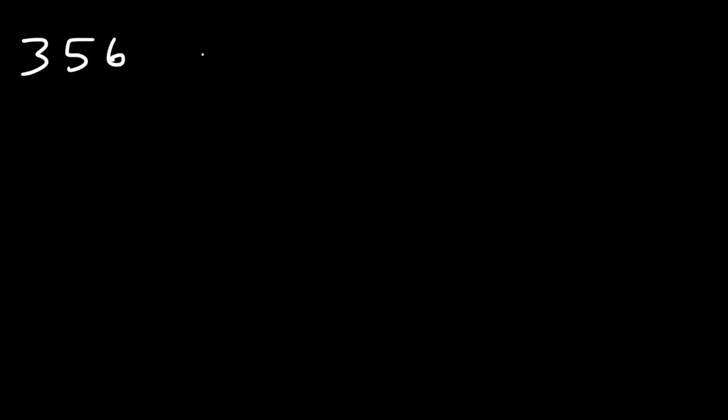In this video we're going to talk about how to convert a decimal number into a binary coded decimal. So let's say we have the number 356. How can we convert it into a binary coded decimal?